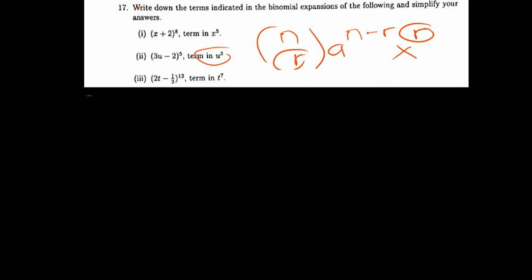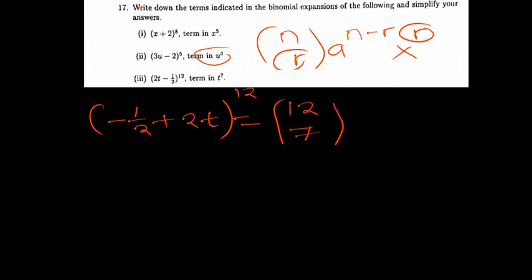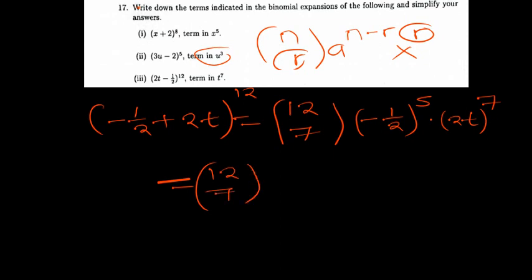Try the last one: negative one-half plus 2t raised to the power of 12, finding the term with t to the power 7. So n is 12, choose 7. Negative one-half raised to the power of 12 minus 7, which is 5, multiplied by 2t raised to the power of 7. 2 to the power 5 is 32, and 2 to the power 7 is 128, so we have 12 choose 7 times negative one over 32 times 128 times t to the power 7.